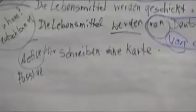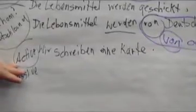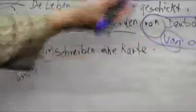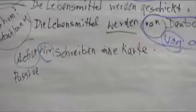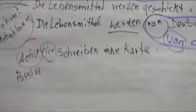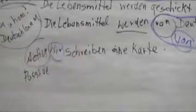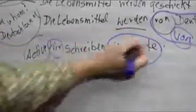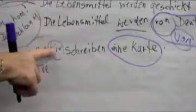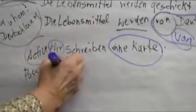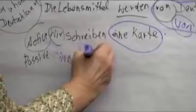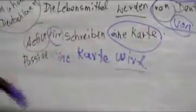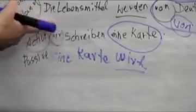To close our lesson today, I gave you an active sentence, and here we are going to have a pronoun. The active sentence says: wir schreiben eine Karte — we are writing a card. Now, how do we make that passive? In the active sentence, we are in the middle, the center of attention. But in a passive voice sentence, the card is going to be the center of attention, so it has to start our sentence. A card is being written by us — eine Karte.